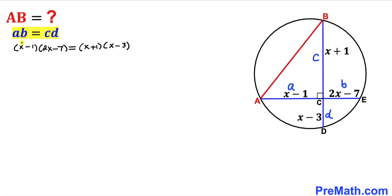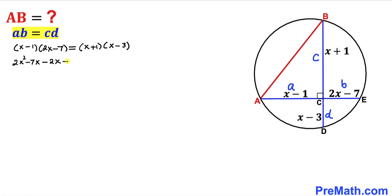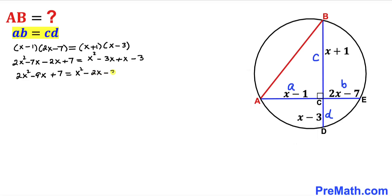Let's go ahead and multiply these factors by double distribution. On the left-hand side we get 2x squared minus 7x minus 2x plus 7, and on the right-hand side that gives us x squared minus 2x minus 3. Combining like terms on both sides gives us 2x squared minus 9x plus 7 equals x squared minus 2x minus 3.